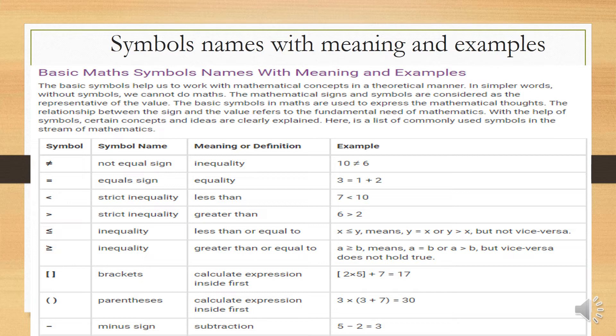The next symbol is parentheses. The definition of parentheses is that we calculate expressions inside first, just like brackets, using PEMDAS or MDAS. Example: 3 times (3 plus 7) — 3 plus 7 is 10, then times 3, the result is 30.